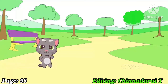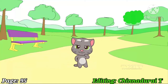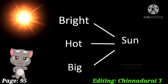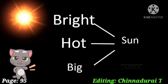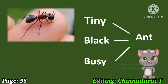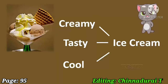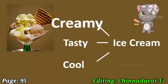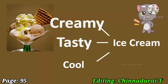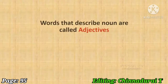Hello friends, my name is Joe. It's good to see you all again. Shall we describe some objects? First, let us describe the sun: bright sun, hot sun, big sun. Let us describe an ant. Ice cream: creamy ice cream, tasty ice cream, cool ice cream. Words that describe a noun are called adjectives.